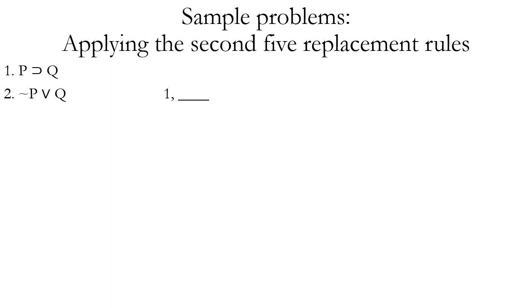Another problem: moving from a horseshoe to a wedge, where we have the first disjunct have a negation added to it. That is the material implication rule.